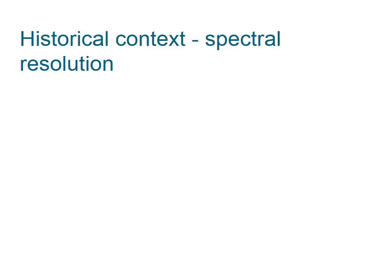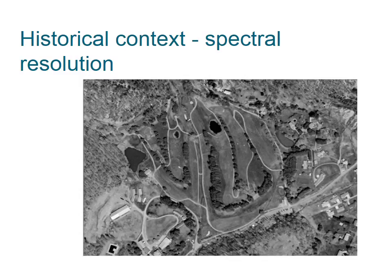It is useful to examine the historical context of spectral resolution. Originally, black and white film recorded only one set of information — only one band in the entire visible light spectrum. When displayed on black and white film, what a photo interpreter would see would be numerous shades of gray. This limited photo interpretation because humans can only distinguish about 20 shades of gray.